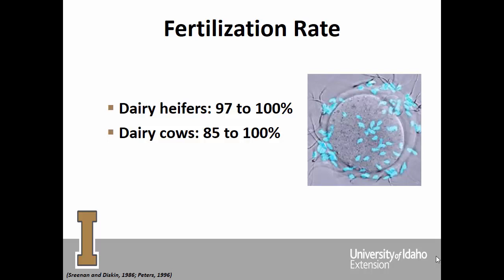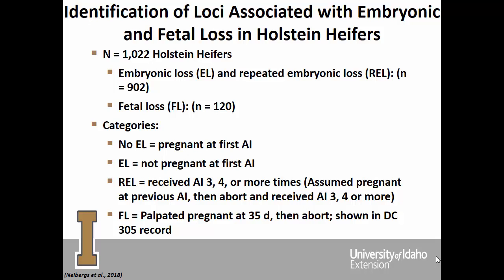Looking at slaughter studies of dairy heifers and dairy cows shortly after insemination — recovering reproductive tracts at the slaughterhouse and flushing the oviducts — we see 97 to 100% fertilization in dairy heifers and 85 to 100% in dairy cows. We also looked at identification of loci associated with embryonic and fetal loss in Holstein heifers, with a dataset of over a thousand heifers.